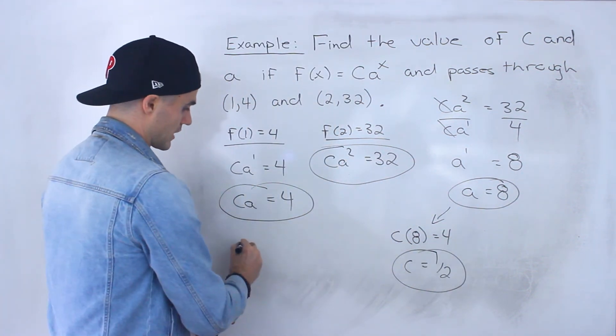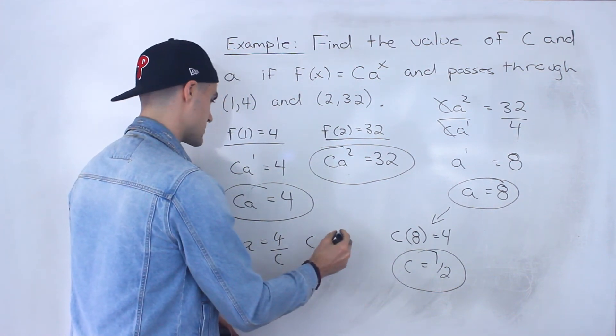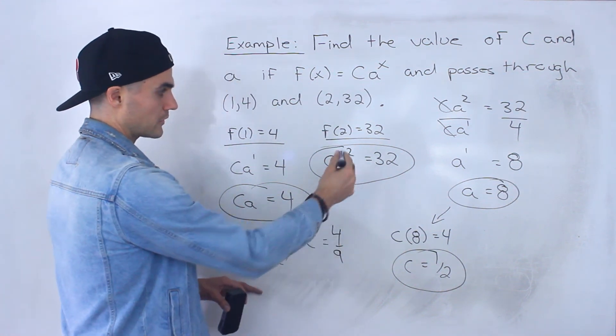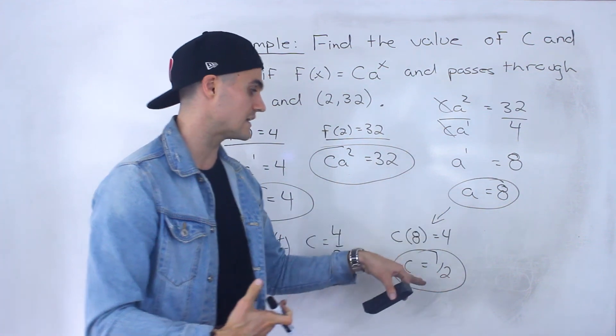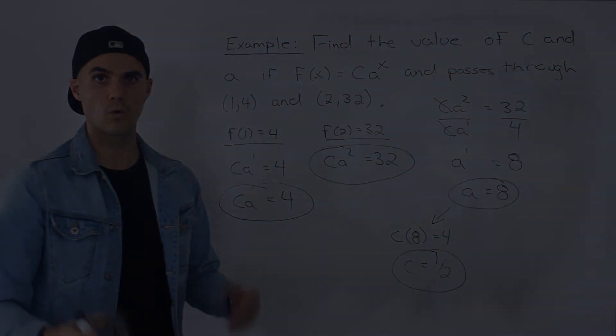Right? So whichever way you do it, you could have also isolated for a or isolated for c and then took these expressions, maybe plugged it in here. Whichever way you do it, you should end up getting an a value of 8 and a c value of 1 over 2.